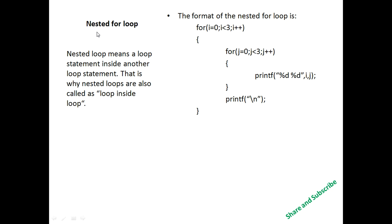Now I describe the nested for loop. A nested loop means a loop statement inside another loop statement. That is why nested loops are also called a loop inside a loop. Here is a simple example of the nested loop — this is called the outer loop and this is called the inner loop.